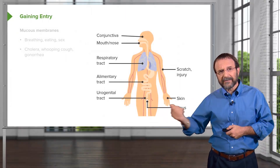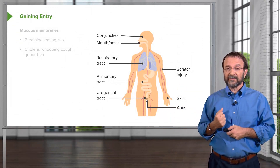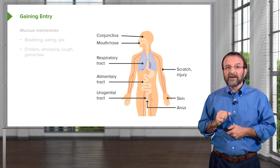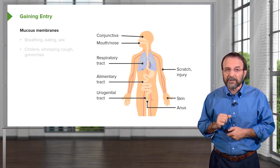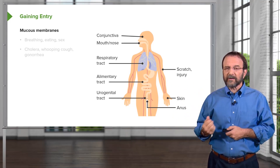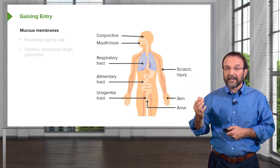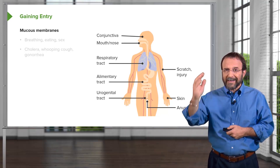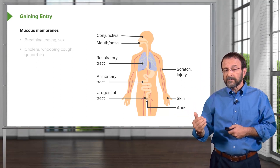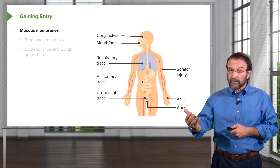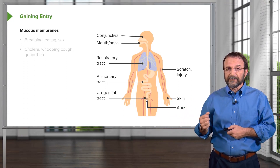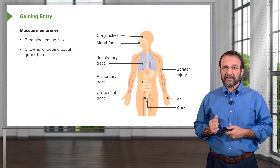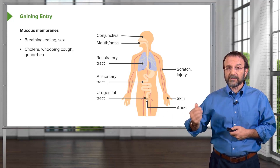Let's talk about how bacteria gain entry to the host from exogenous sources. The human body provides a very large spectrum of places for bacteria to enter. A very common place is a mucous membrane. We have mucous membranes all throughout our body — our eyes, our mouth and nose, and the entire alimentary tract, which is essentially a very long tube from our mouth through our intestines and out the anus. That is all lined with mucous membranes because it has to absorb food and excrete waste. Because it's a mucous membrane, it is vulnerable and not sealed against entry. Breathing, eating, and having sex can all introduce pathogens. Cholera, whooping cough, and gonorrhea are examples of bacterial infections acquired across mucosal membranes.